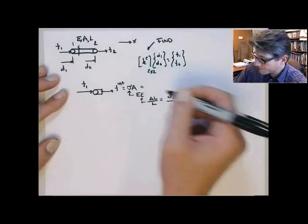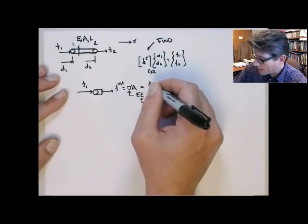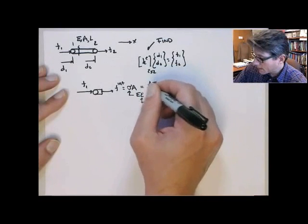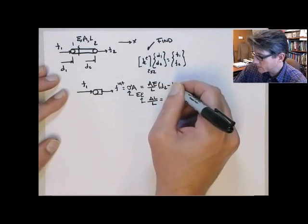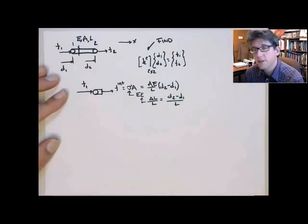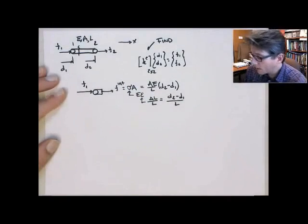So all this gives us EA over L times d2 minus d1. That's the externally applied force when I substitute all this back in for sigma.